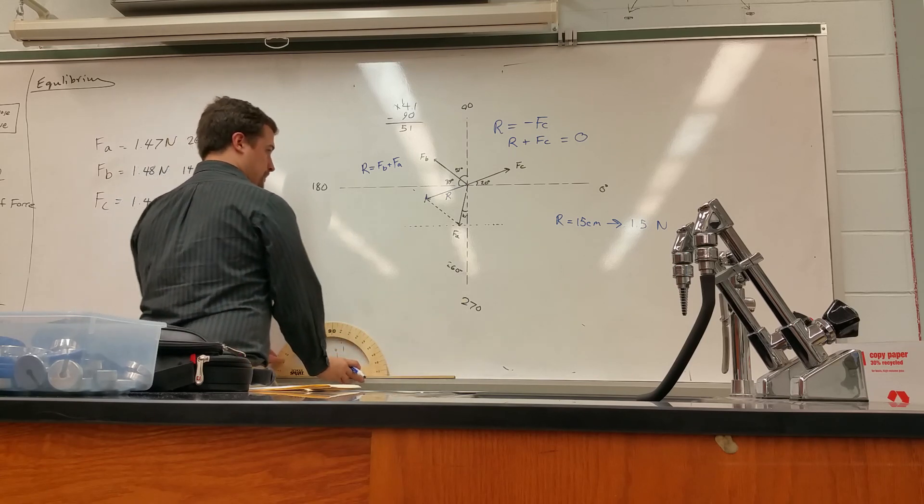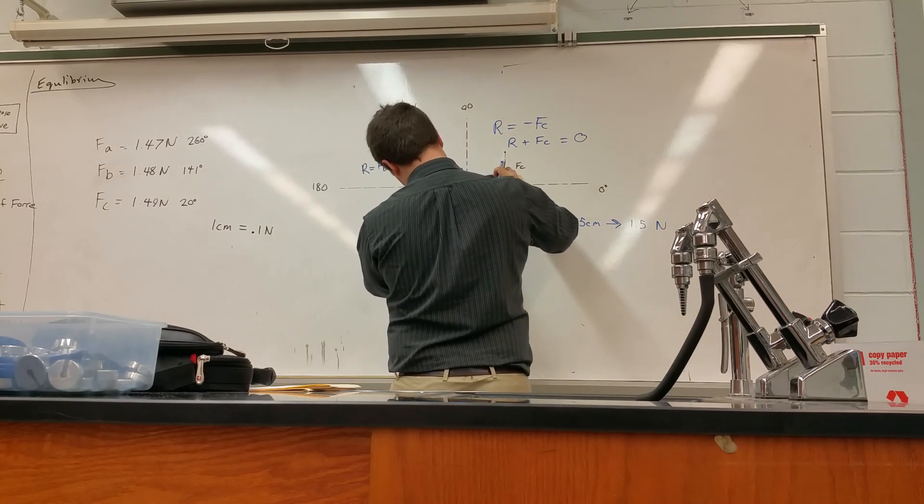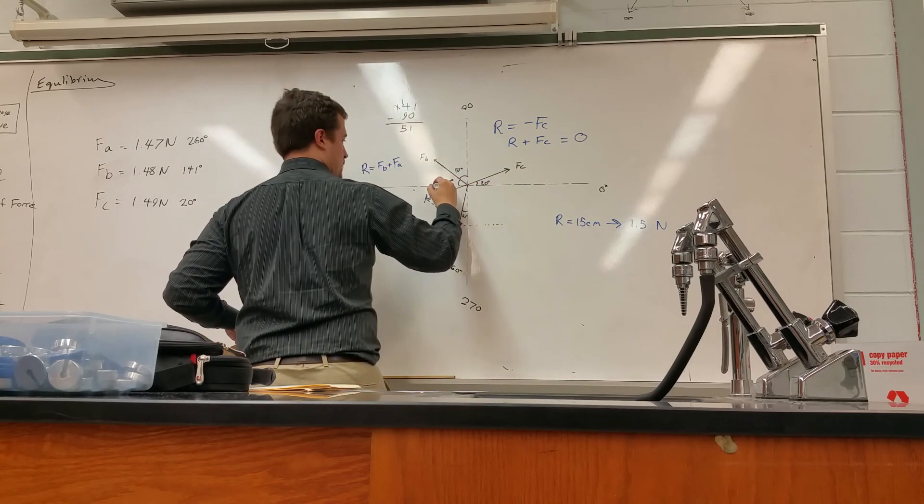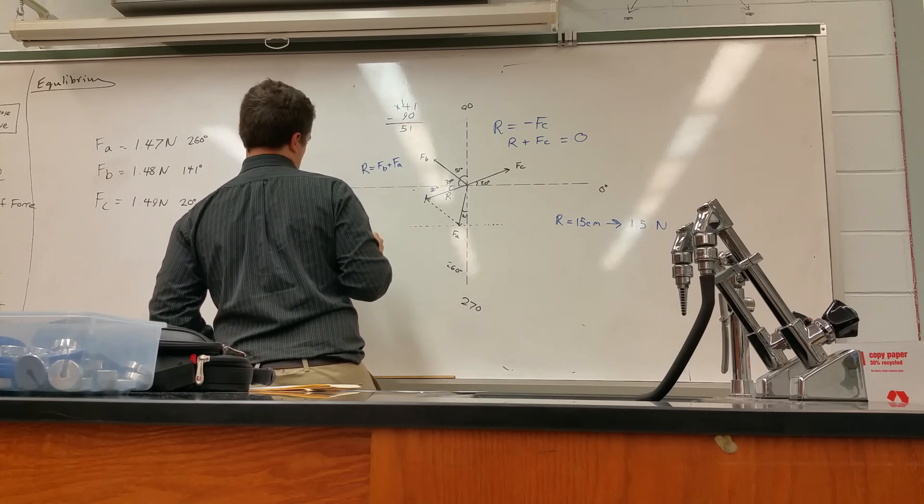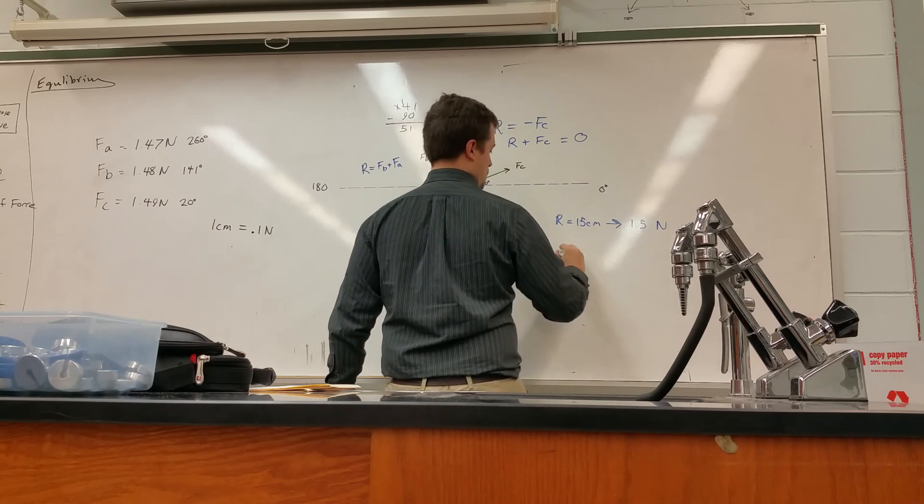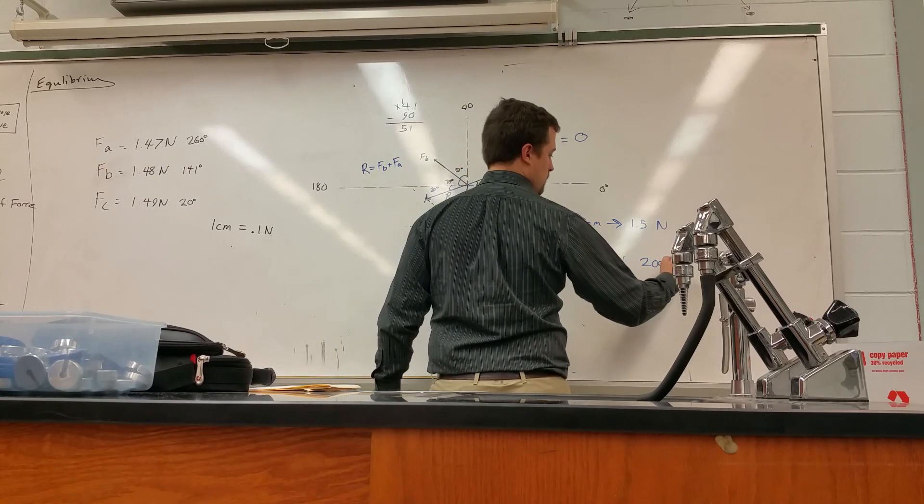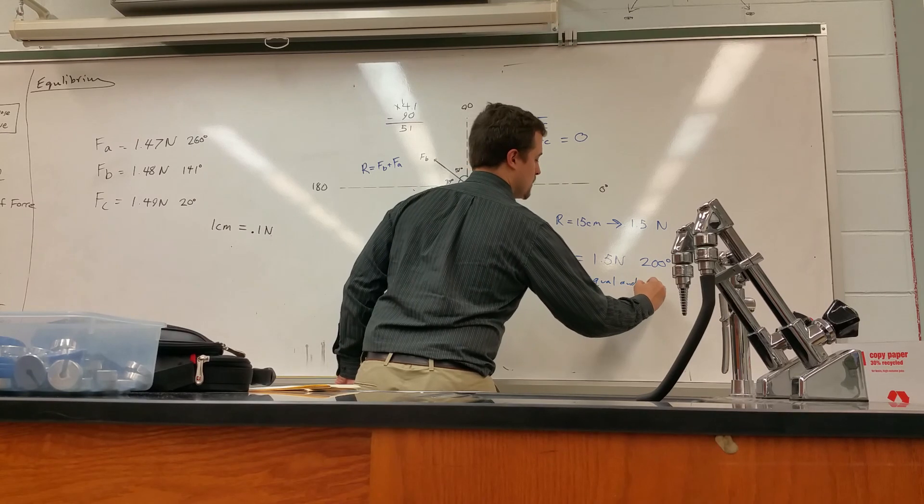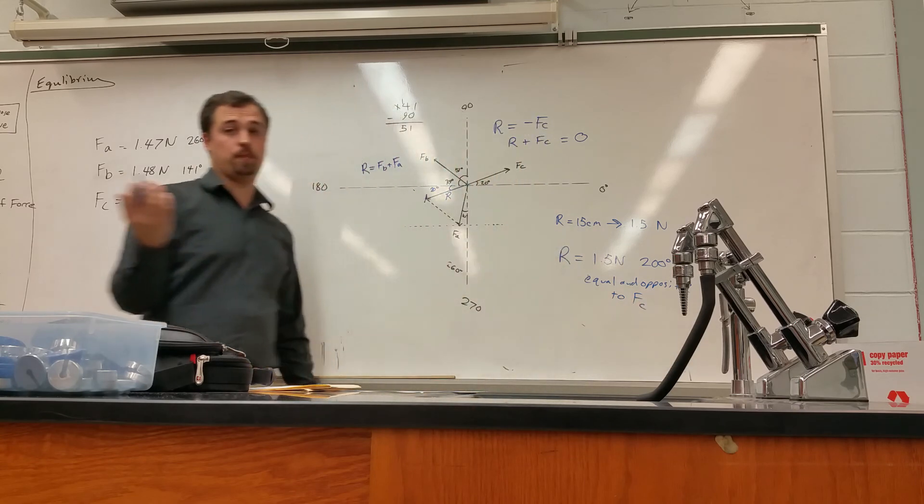And the angle, just to make sure—the angle is, it's hard to tell but it's close to it, it's 20 degrees. This here is 20 degrees south of 20, or you would say that that's 200 degrees. So this would be R. So R would be equal to 1.5 newtons at a direction of 200 degrees, equal and opposite to FC, which is what should be expected by our theory.